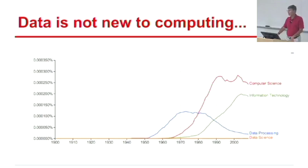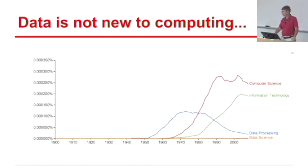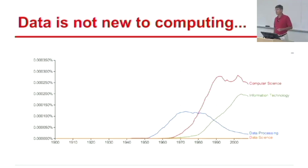Data is not a new thing to computing. This is a graph from a website called Google Ngrams. Google has scanned millions of books — something like about 20% of all books ever published. They broke each book down into short phrases and tracked how many times each phrase was mentioned every year. So you can see the rise and fall of different patterns in an annual time series for any short phrase you type in. For example, if you type in Steven Skeena, you'll see he emerged in a minor way in the late 80s and early 90s, with a few more references since then.